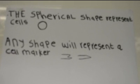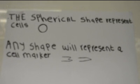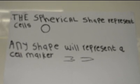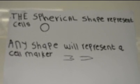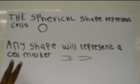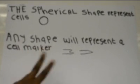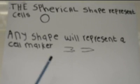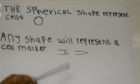These cell markers do not actually connect with each other. They interact with each other, meaning there is a distinct, clear space between each cell. The spherical shape represents the cells, and any shape represents the cell marker. Here, the cells are illustrated.